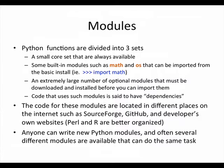Python modules come in three basic types. There's a core set of modules that are always available - the functions we've been using. Then there are built-in modules you can load just by typing import, such as import math or import OS - those are present in the basic Python distribution. And then there are a very large number of optional modules that must be downloaded and installed. The Anaconda distribution you've already downloaded had a large number of these optional modules pre-installed.